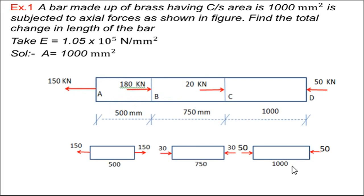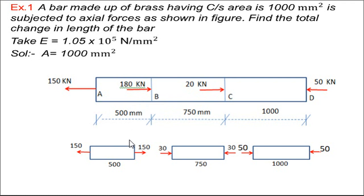Next problem: A bar made of brass having cross-sectional area of 1000 mm² is subjected to axial forces as shown in the figure. Find the total change in the length of the bar. E, the modulus of elasticity, is given. The brass bar has a constant cross-sectional area of 1000 mm² throughout its length and is subjected to different axial forces, which may be tensile or compressive in nature.